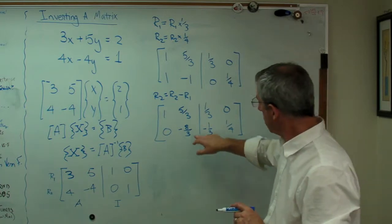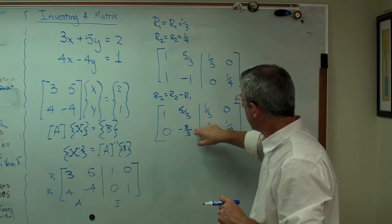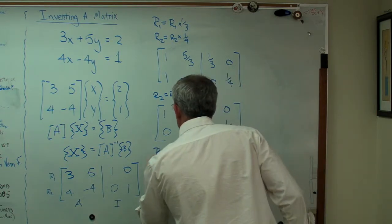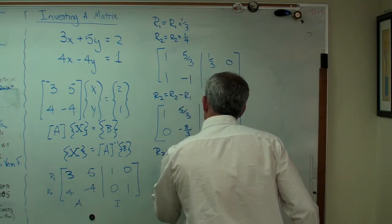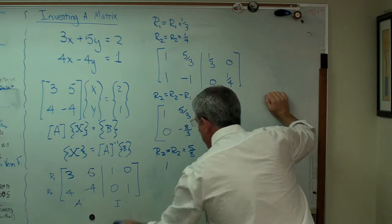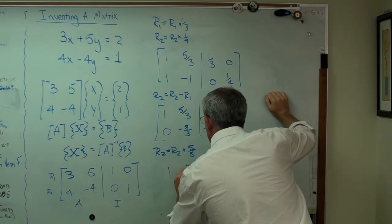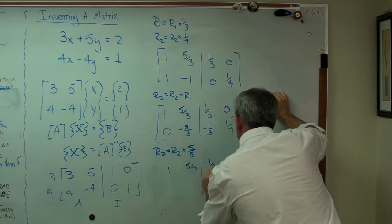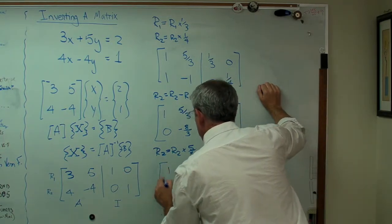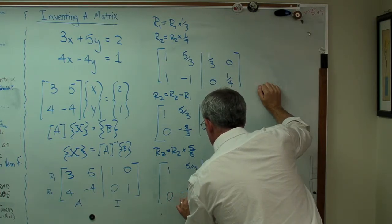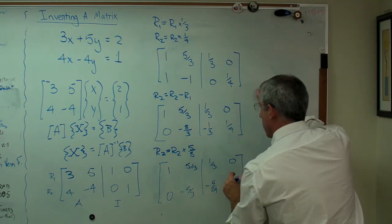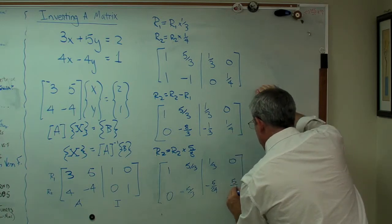Now the next thing I'm going to do is multiply this row right here by 5 over 8, because I want this to be 5/3 so I cancel that out. So I'm going to say R2 equals R2 times 5/8. And I think you might see where I'm headed here. So I'm going to get 1, 5/3, 1/3, and 0, because remember row 1 hasn't changed. I'm not doing anything to it, so I just write it down again. There's that now. I get minus 5/3. This is now going to be minus 5/24, and that's now going to be 5/32.